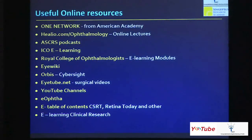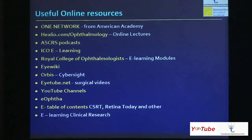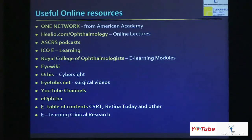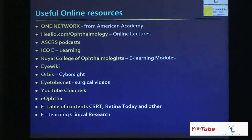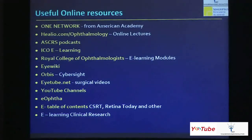So what we've really looked at very quickly is the ONE Network, Helio, ASCRS podcasts, ICO e-learning courses, the Royal College of Ophthalmologists, iWiki, the Orbis website, iTube.net, YouTube channels, the table of contents from various publications, and e-learning on clinical research. I hope you take advantage of all of these — I'm sure there are lots more which you can fill in as we go ahead. These resources are proliferating very quickly, so a word of caution: look at the source from which it is coming, and then think about whether you want to take up that material or not. Thank you.